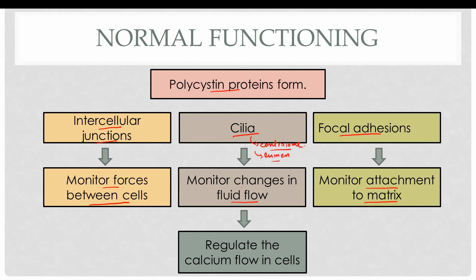Fluid flow inside the renal tubules causes the cilia to move and open the calcium channels, resulting in increased calcium influx inside the tubular epithelial cells. This increased calcium influx performs two functions: it inhibits the proliferation of tubular epithelial cells and maintains the polarity of the tubular epithelial cells.